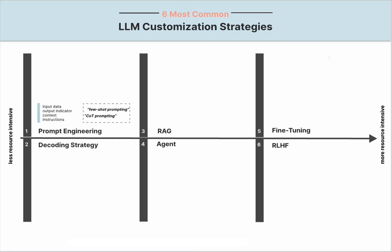Let's start with prompt engineering. A prompt is the input text sent to an LLM to elicit an AI-generated response, and it can be composed of instructions, context, input data, and output indicator. Instructions provide a task description for how the model should perform, and context is the external information to guide the model to respond within a certain scope. Input data is the input for which you want a response, whereas output indicator specifies the output type or format. Prompt engineering is the technique that crafts these prompt components strategically to shape and control the model's response.